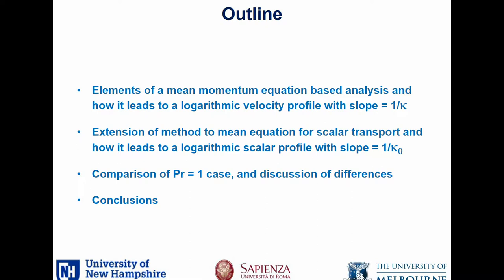The talk is going to proceed by first showing some elements of the analysis for the mean momentum equation, which is a little more simple to understand, and then we'll move on to the same method for the mean equation for scalar transport — which ends up being a two-parameter problem with a Reynolds number and Prandtl number — and then we'll do an interesting comparison of the Prandtl number equal one case, because that allows you to look at two mean flow equations that have the same form, same boundary condition, but give different solutions because of the indeterminacy of the mean equations.